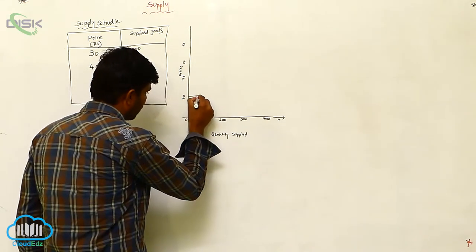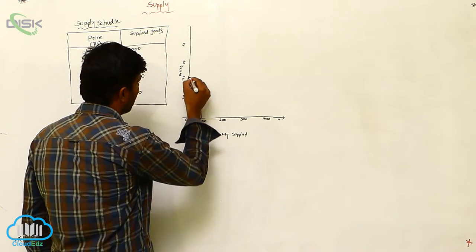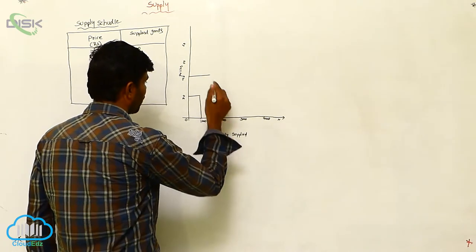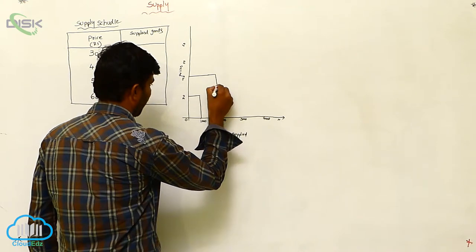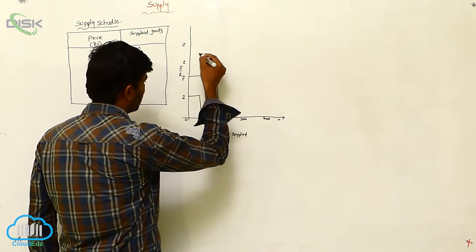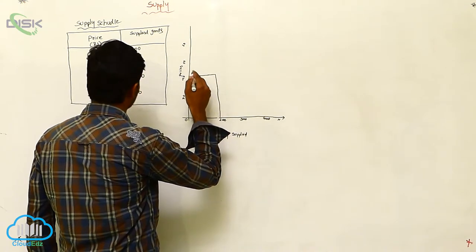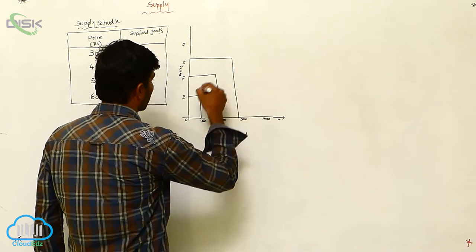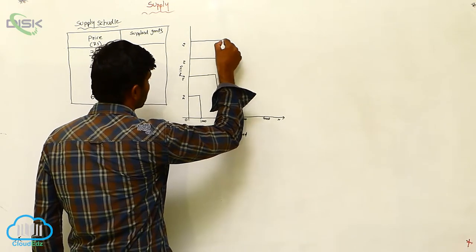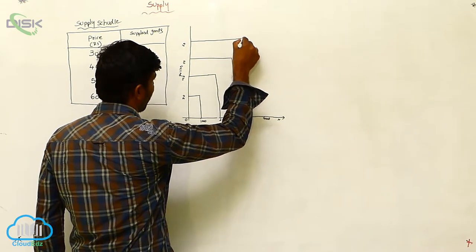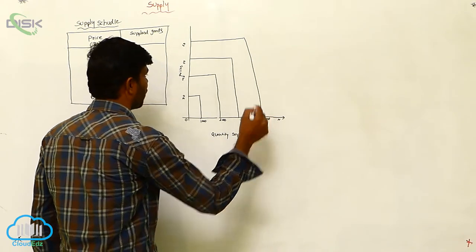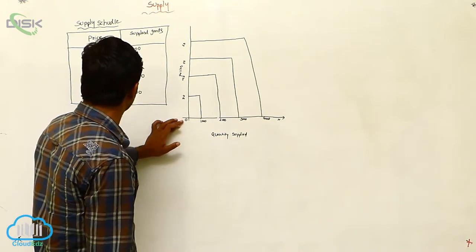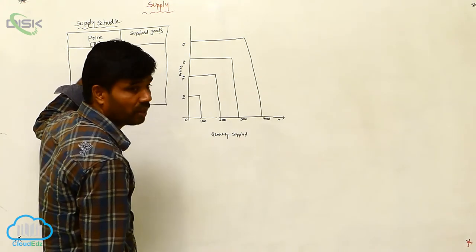These belong to the first stage, second stage, third stage, and last stage. Look what will happen: if price is increasing, if supply is increasing, price is also increasing.